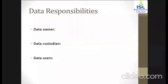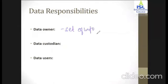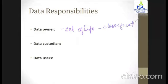The next topic is data responsibilities, of which there are three types: data owner, data custodian, and data user. The data owner is responsible for the security of a particular set of information and usually determines the level of data classification — how the data is classified, what classifications are associated with it, and what changes are needed so the organization is satisfied with how this data is stored.